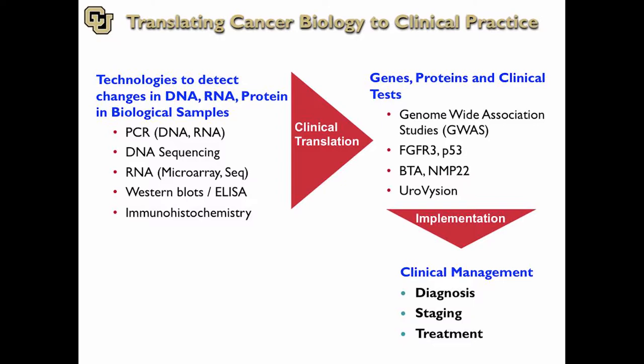They're DNA, RNA, and then you basically do PCR, DNA sequencing, microarrays, expression of RNA. I'm going to show you examples of all these — Western blots, immunohistochemistry. And then we translate that knowledge into genes, proteins, and clinical tests. I'm going to give you vignettes of some of these. You've already heard Peter Black talking about FGFR and these two tests, as well as UroVysion. I'm going to give you a little more in-depth knowledge on the science underlying those. And then once these tests are developed, you basically have to implement them and study them in the clinical scenario and see what their characteristics are in terms of helping you manage patients.